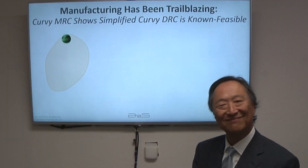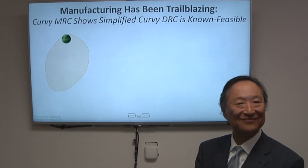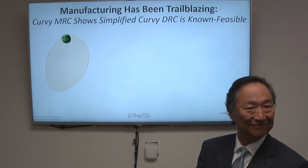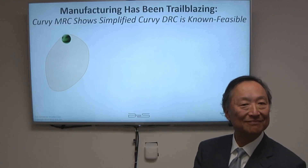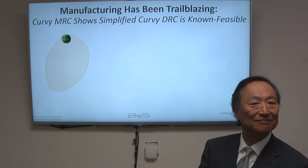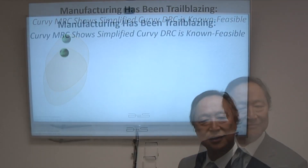Hi, I'm Ed Sperling. I'm the editor-in-chief of Semiconductor Engineering. I'm over at D2S with Aki Fujimura. I'm going to talk today about the changes that are happening on the EDA side in order to take advantage of curvilinear shapes in the mask shop. Aki, we've been hearing about curvilinear shapes for a long time and printing on the masks. What happens on the data side within the manufacturing area? What's changing? How is that going to affect things?